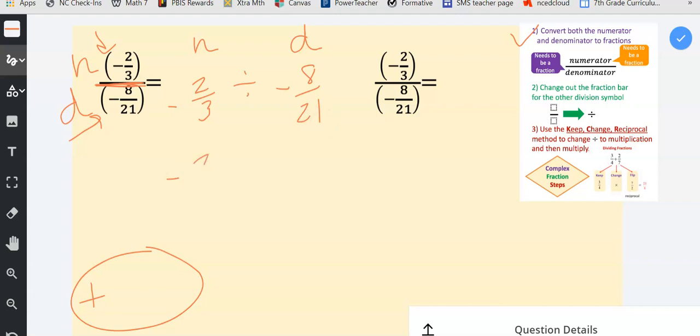Then I'm going to rewrite the problem to prep for the next step. Step three says use the keep change reciprocal method to change division to multiplication, and then multiply. So we're going to use the keep change reciprocal method. I keep the negative two-thirds, that does not change. I do change the division to multiplication, and I record the reciprocal of eight over twenty-one, which is twenty-one over eight.